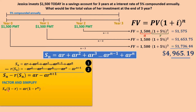Dividing both sides by (1 − r) to solve for Sₙ gives us: Sₙ = ar(1 − rⁿ) / (1 − r). You can mainly use this equation when r is less than one. When r is greater than one, we need to use a different form of the equation. Practically they give the same answer, but the alternative form will help us derive the annuity due formula.